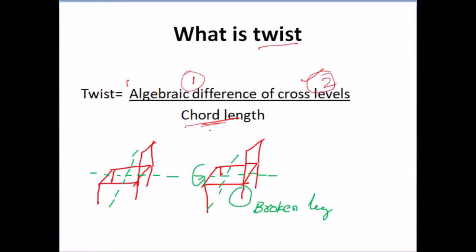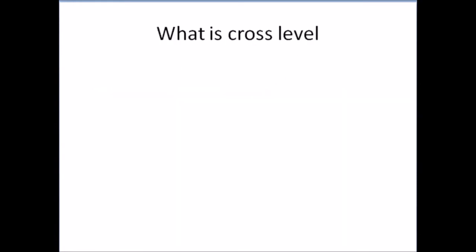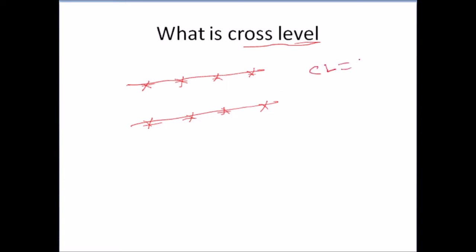Let us say this is the track, and these are the station points. Cross level means: suppose these two tracks are at the same level, then cross level is equal to zero. If two tracks are at the same level, cross level is equal to zero. Let us take this track as LH and this track as RH.